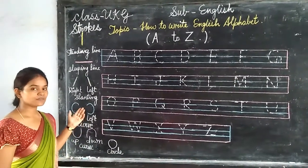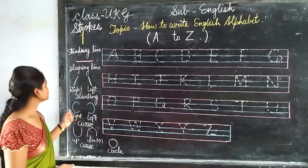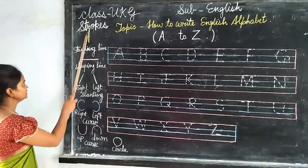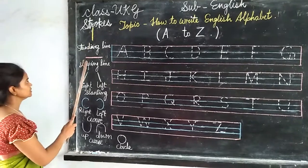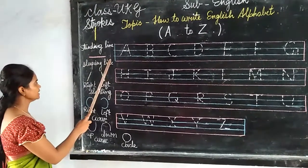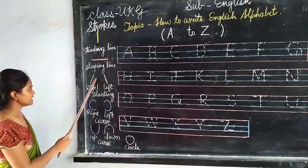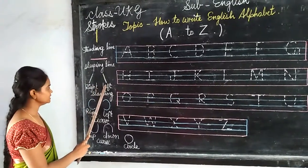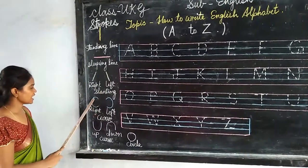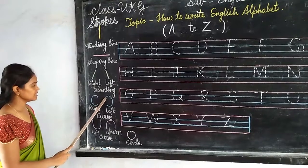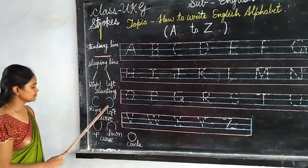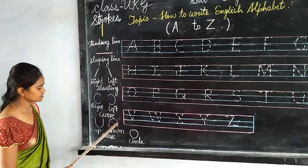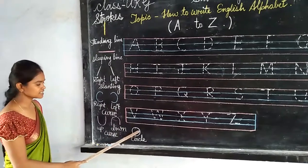Here are some kinds of strokes: standing line, slipping line, right slanting line, left slanting line, right curve, left curve, up curve, down curve. And last is circle.